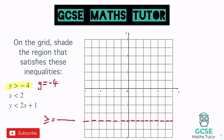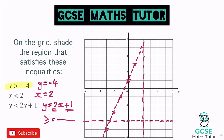The next one: x is less than 2, so we draw x equals 2 as a vertical line going up and down through that point. Then we've got y equals 2x plus 1. The y-intercept is 1, so I start at 1 on the y-axis, and the gradient is 2, so I go across 1, up 2, following that pattern and going backwards too — across left 1, down 2. I draw a dotted line through all these points.